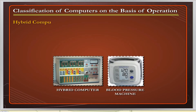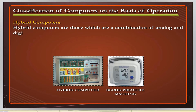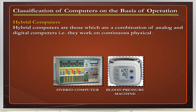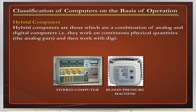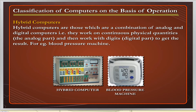Hybrid Computers are a combination of analog and digital computers. They work on continuous physical quantities — the analog part — and then work with digits — the digital part — to get the result. For example, a blood pressure machine.